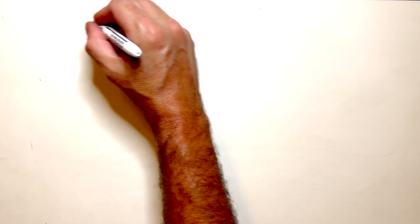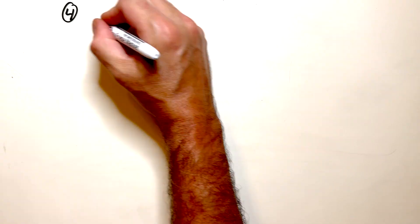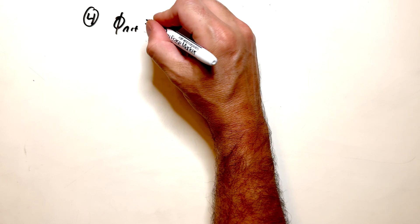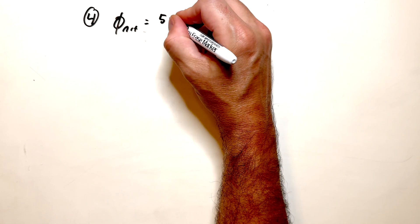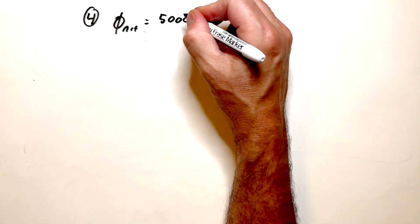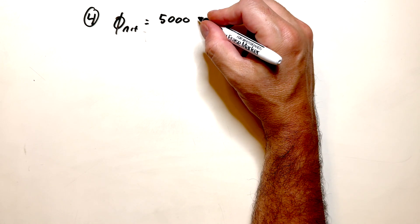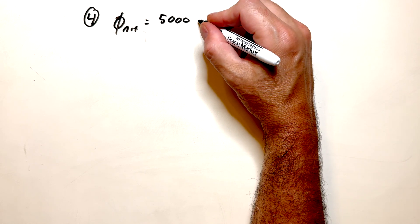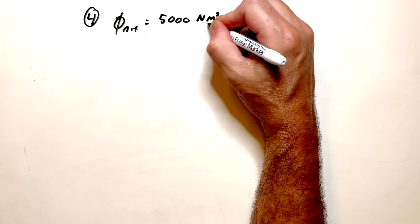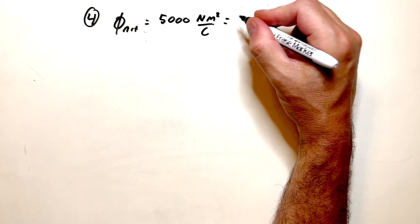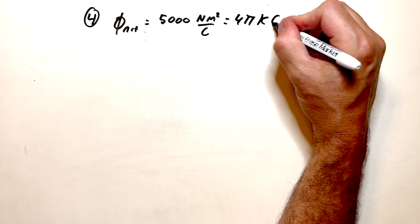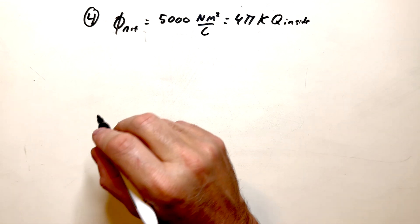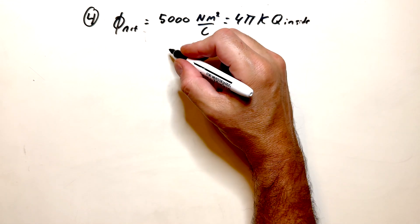We know that, this is number four, that phi net from careful measurements is equal to, I'm just going to write this instead of 5k, I'll write this 5,000, and that's newton meters squared per coulomb. So newton meters squared per coulomb. And this, of course, is equal to four pi k q inside. And so that's what we're going to calculate. What is q inside? So we solve for q inside.